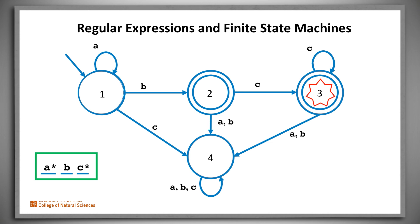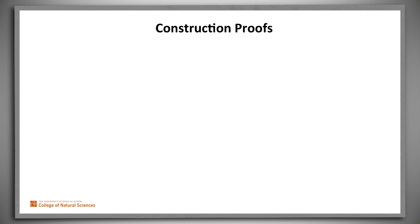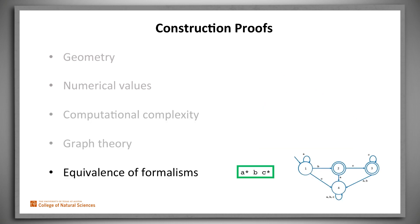The proof of this claim is by construction, actually two constructions. We first show an algorithm that takes as input a regular expression and builds an equivalent finite state machine. Then we show a second algorithm that takes as input a finite state machine and builds an equivalent regular expression. So, you've now seen examples of several kinds of problems for which construction proofs are often useful: geometry, the existence of numerical values, computational complexity, graph theory, and equivalence of different formalisms.